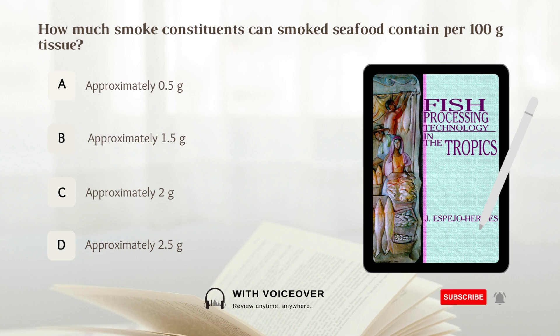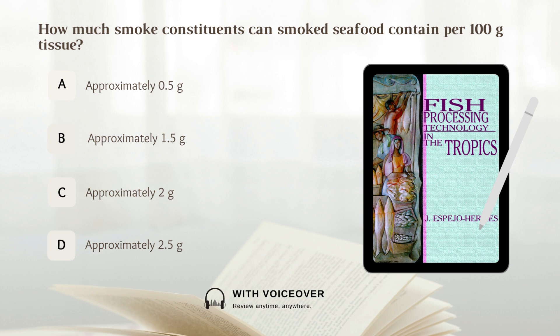How much smoke constituents can smoked seafood contain per 100 grams of tissue? A. Approximately 0.5 gram. B. Approximately 1.5 grams. C. Approximately 2 grams. D. Approximately 2.5 grams. Answer: A. Approximately 0.5 gram.